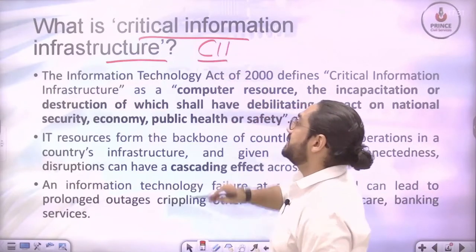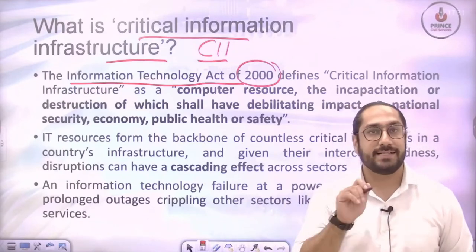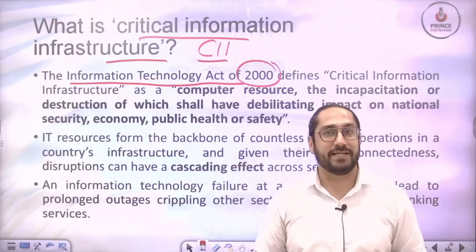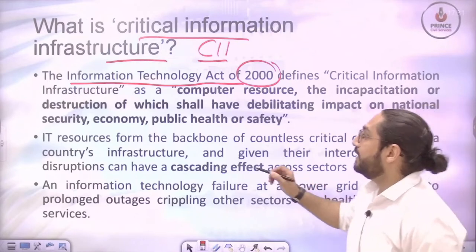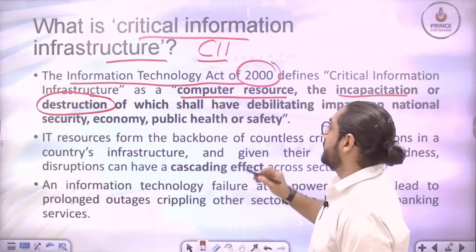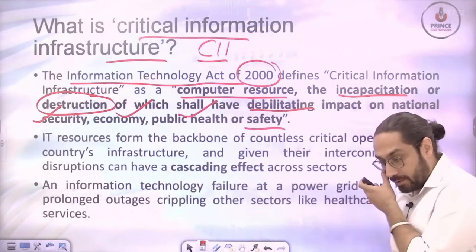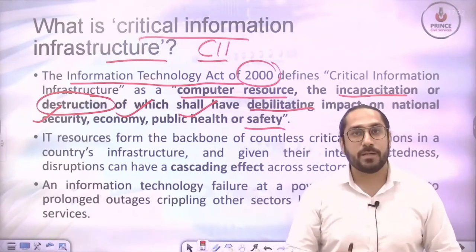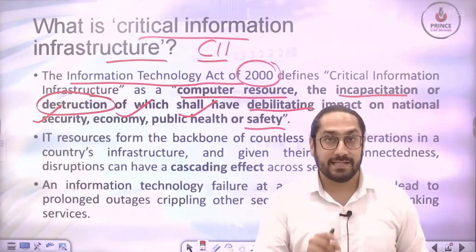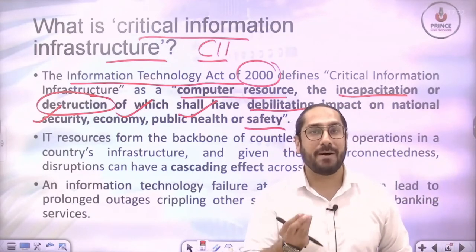Critical Information Infrastructure is defined under the Information Technology Act of 2000, that is the IT Act 2000. CII is defined as a computer resource, the incapacitation or destruction of which shall have a debilitating impact on national security, economy, public health, or safety. So if a key IT resource is destroyed or not working, it creates a larger impact on national security, economy, and public health.